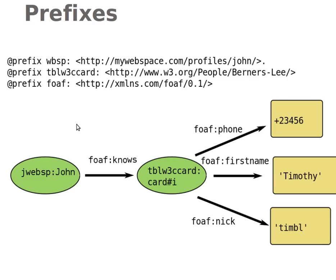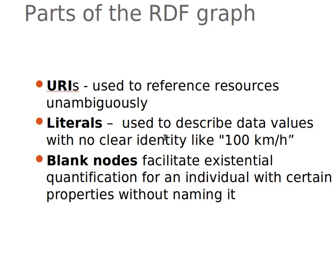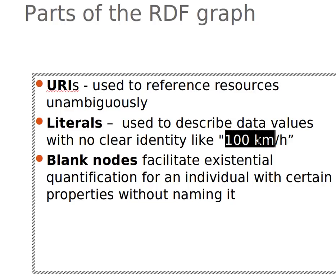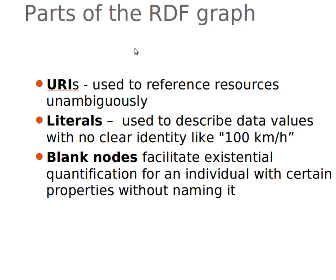Literals are the data values — they are used to describe data values with no clear identity. We can also use blank nodes. Blank nodes facilitate quantification of an individual with certain properties without naming it. Basically, if we have a block of data about the same resource, we can use a blank node as a kind of reference pointer to that data within the document. You can find a dedicated explanation in my 'Understanding Blank Nodes' video on my YouTube channel.